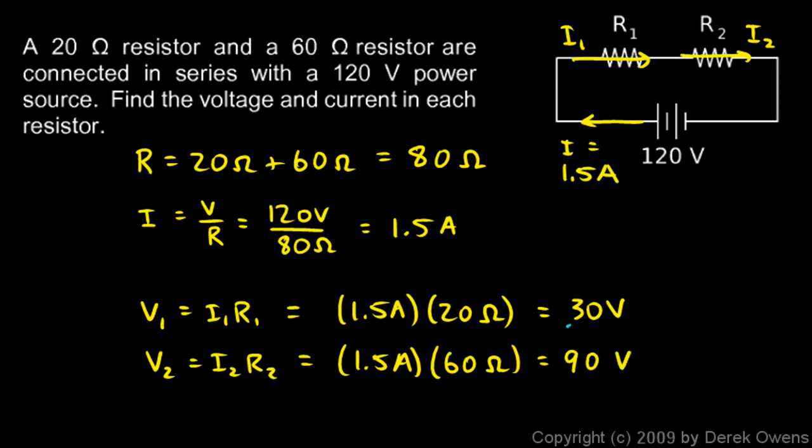And again take note that the 30 volts and the 90 volts adds up to 120. As before we said that resistors in series, not only is the current the same, it's 1.5 amps in each case, but the voltages add up to the total.